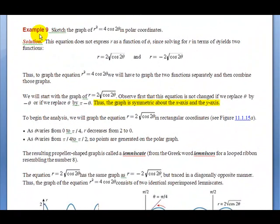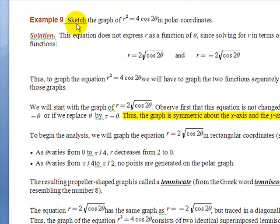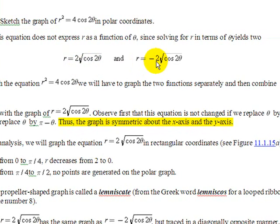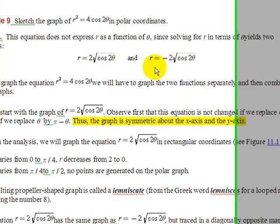Next, we're going to take a quick look at example 9 from your textbook. It asks us to sketch the graph of R² equals 4 cosine 2θ in polar coordinates. Now the first thing that they note in the solution to this example is that this equation does not express R as a function of θ. In other words, if you try to solve for R in terms of θ, you get a plus or minus because of the squared. So R is actually equal to 2 times the square root of cosine 2θ and negative 2 times the square root of cosine 2θ. So to get the graph, we're going to need to graph both parts.